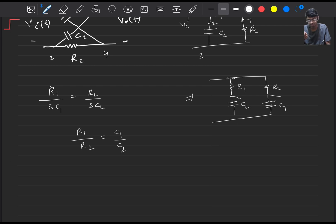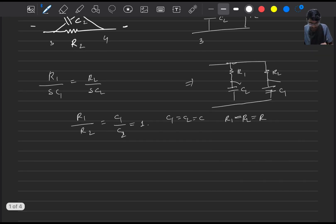Now R1 divided by R2 should be equal to C1 divided by C2. As in our case we have taken C1 and R1 and C2 everything is equal, so this will be one. C1 equals C2 equals C, R1 equals R2 equals R.